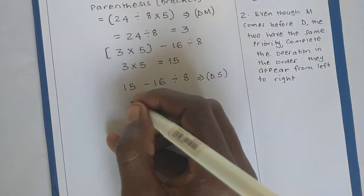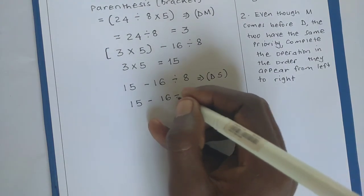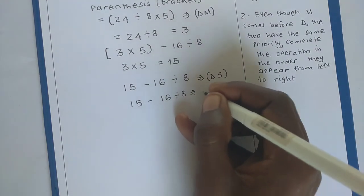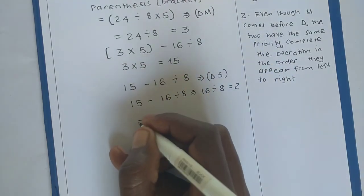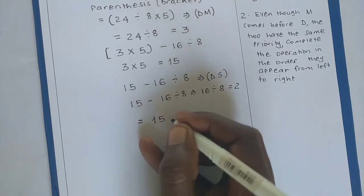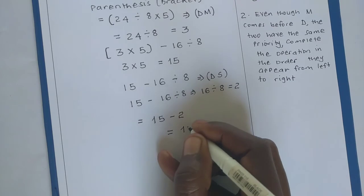So we have 15 - 16 ÷ 8. 16 ÷ 8, we get 2. So we end up with 15 - 2. The end result is 13.